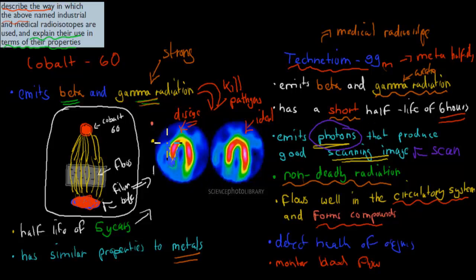Cobalt-60 was useful because it was very strong, so it could go through metal, but only where there were flaws. Also, it has similar properties to metals, which means we can move it around to wherever we want. I hope that was useful.